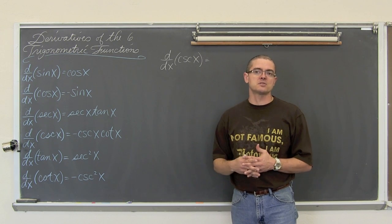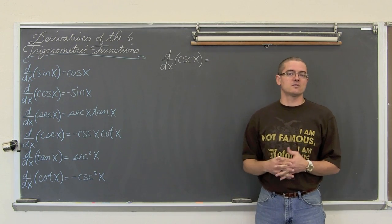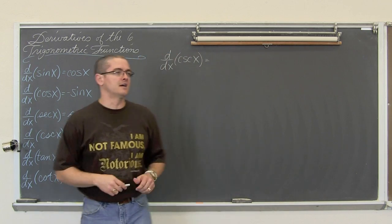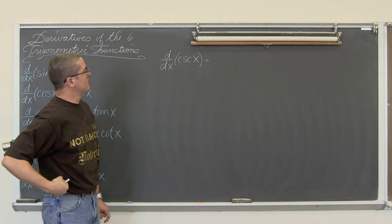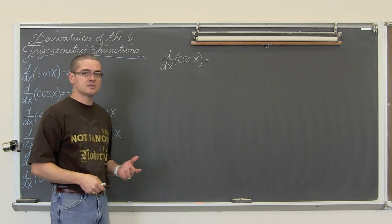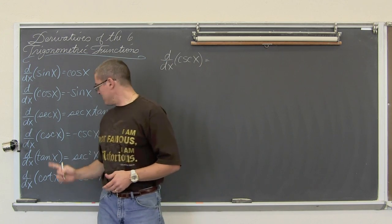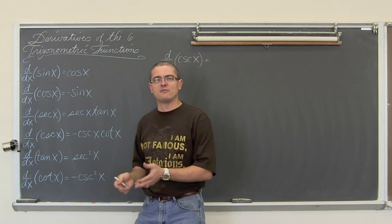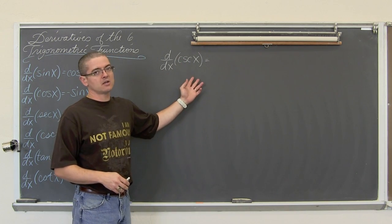Like tangent is sine over cosine, and cotangent is cosine over sine. Well, cosecant is one over sine. So we have the derivative with respect to x of the cosecant of x. I mean, I just told you what the answer was right here, but where does this come from? Why is there all of a sudden two trig functions? Well, to figure that out we are going to write this in terms of sine and cosine.